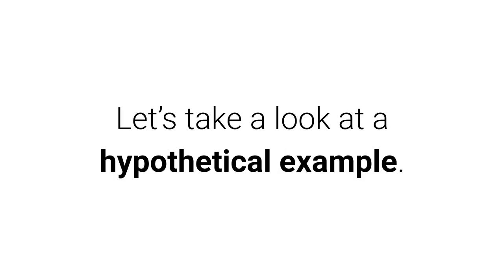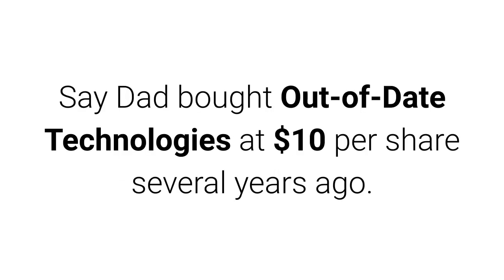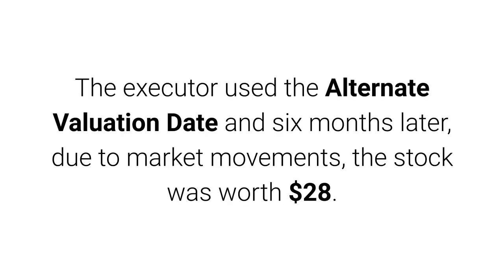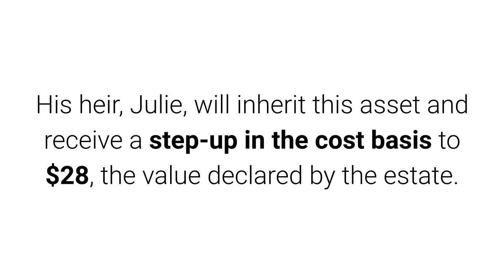Let's take a look at a hypothetical example. Say Dad bought Out of Date Technologies at $10 per share several years ago. At his death, the stock was worth $35. The executor used the alternate valuation date, and six months later, due to market movements, the stock was worth $28.